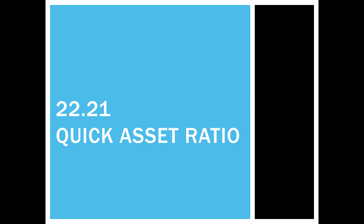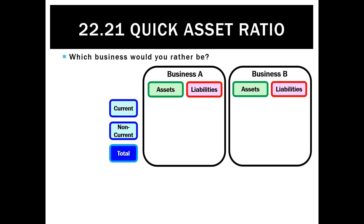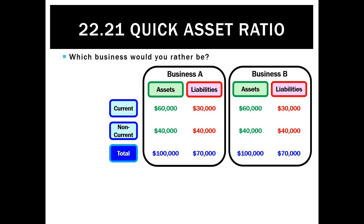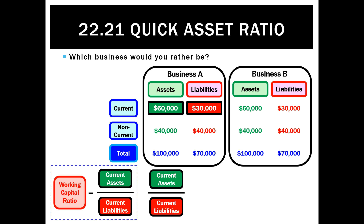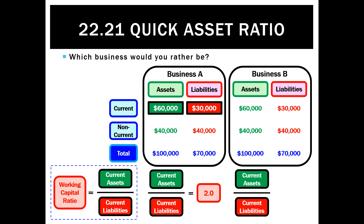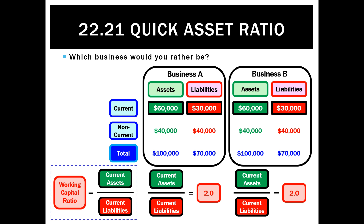Previously we looked at the working capital ratio and said it's a vital ratio because it tells us whether we can meet our short-term debts as they fall due. So one of the things we looked at was which business would you rather be. Both businesses, A and B, had assets of 100 and liabilities of 70. When we classify assets and liabilities as current and non-current, both businesses have current assets of 60 and current liabilities of 60, giving a working capital ratio of 2.0 for both business A and business B. So based on this one liquidity ratio, these businesses are equal.